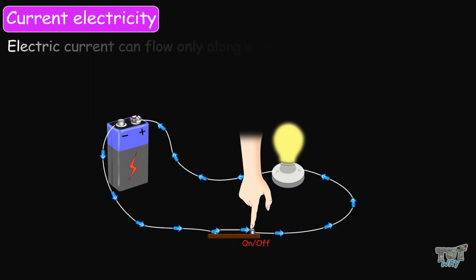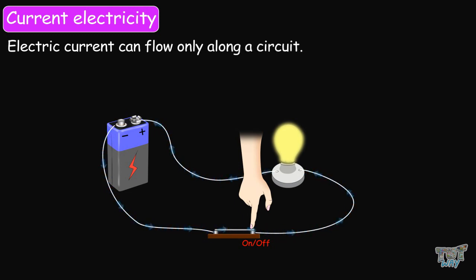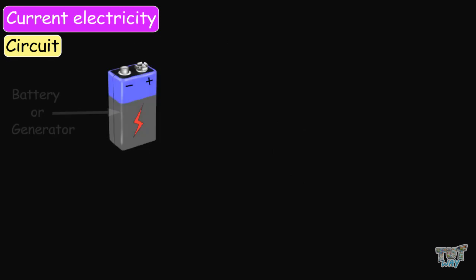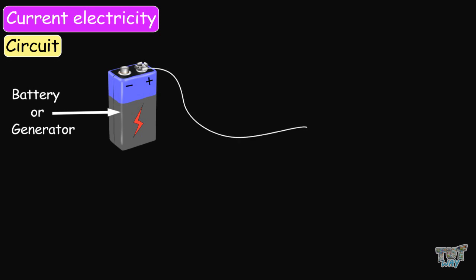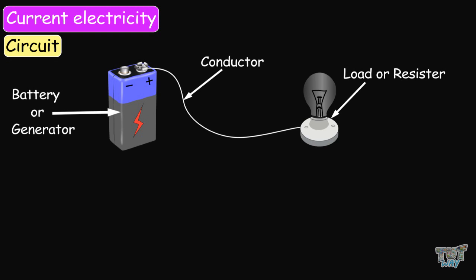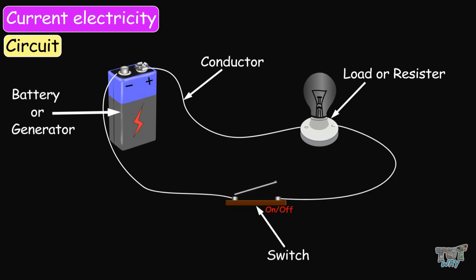Electric current can flow only along a circuit. A circuit includes a source of electricity — this can be a battery or a generator — and then a medium for the electrons to move, known as a conductor. The wires that carry the electric current are conductors. The next part of the circuit is known as the load or resistor, which is an electric appliance that needs to use the electricity.